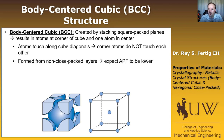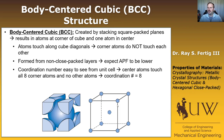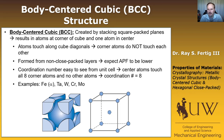BCC is formed from non-closed-packed layers, so we'd expect the atomic packing factor to be a little lower. In terms of the coordination number, it's easy to compute. If you take the center atom, it's only touching the corner atoms, and there are eight corner atoms. So the coordination number for BCC is eight. This is a very common structure — it's the structure of iron, at least alpha iron, as well as tantalum, tungsten, chromium, and molybdenum.